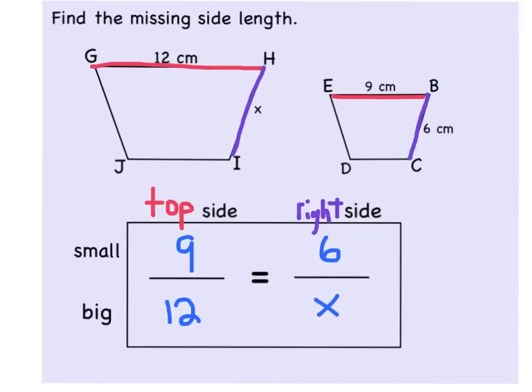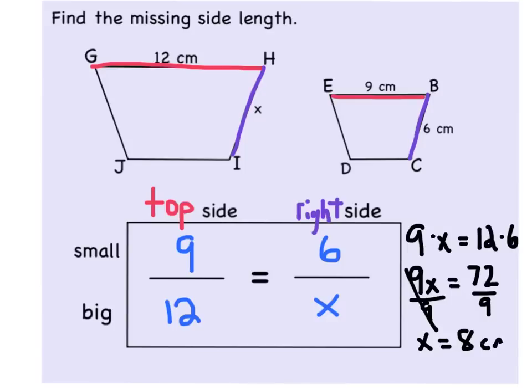Off to the side here, I'm going to do my math. And nine times X will be equal to 12 times 6. Nine times X is just 9X. And 12 times 6 is 72. I'm going to do an inverse operation of divide by nine to get X by itself. And I get X equals 8. Check my label. So, my missing side is 8 centimeters.